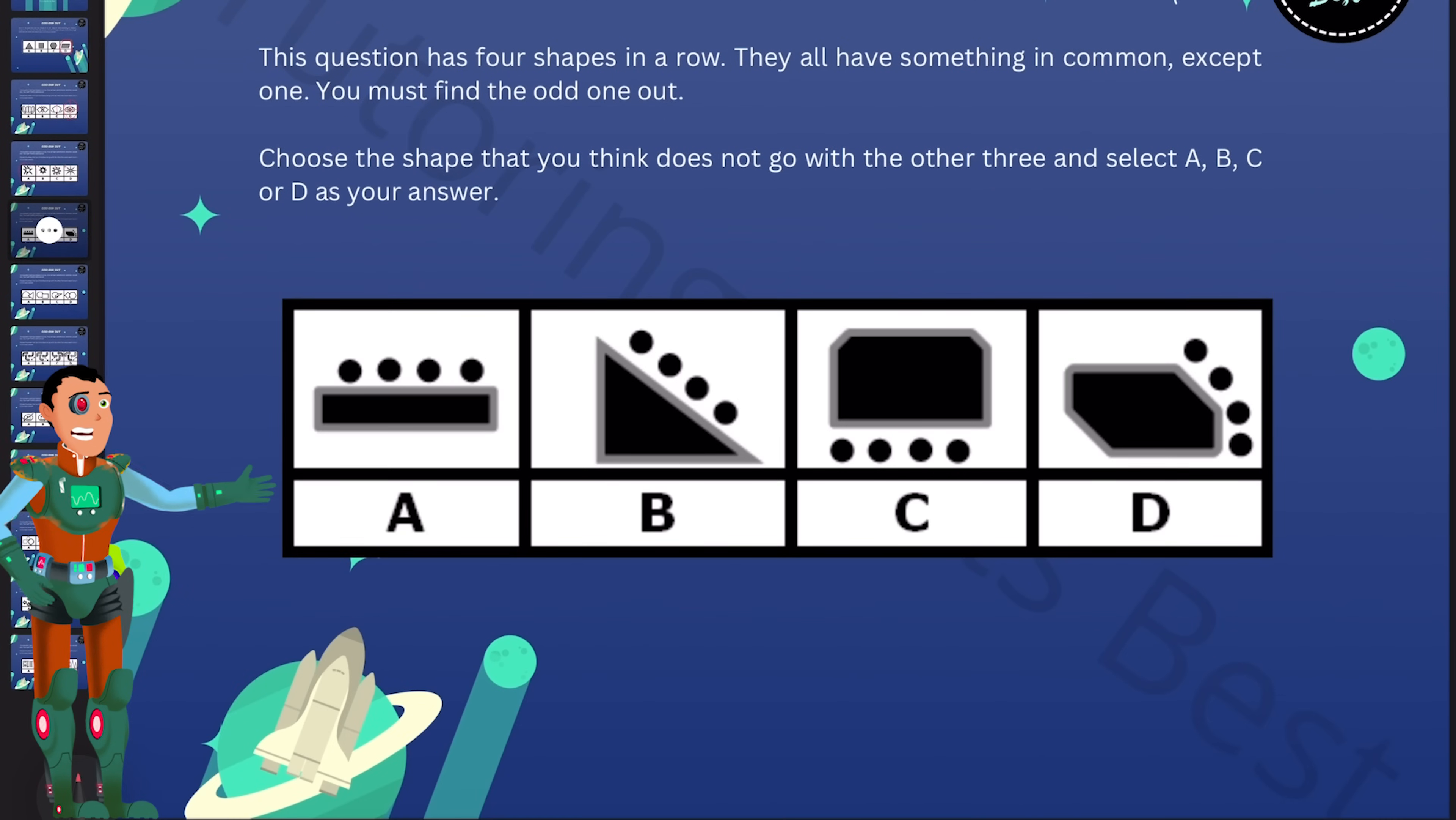Over to the next question. So what do we notice here? We know that figure A, B and C have four dots that are placed in a line along the long side of the main shape. But D has the dots that are curved around the shorter side of the main shape. So for that reason, D is the answer, as it is the odd one out.